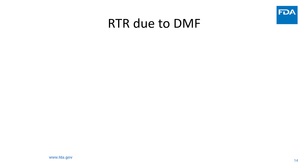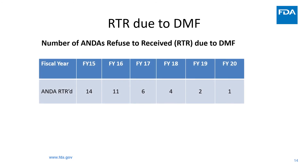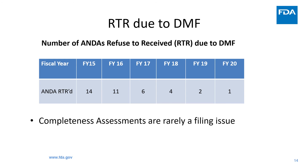And you will agree with that when you see the number of ANDAs refused to receive due to drug master files. This table shows the number of ANDAs refused to receive due to DMFs being incomplete for the last six fiscal years. The numbers are very small and have been steadily declining from FY15 to FY20. During fiscal year 20, only one ANDA was refused to receive. So we can confidently say that the completeness assessments are really a filing issue.